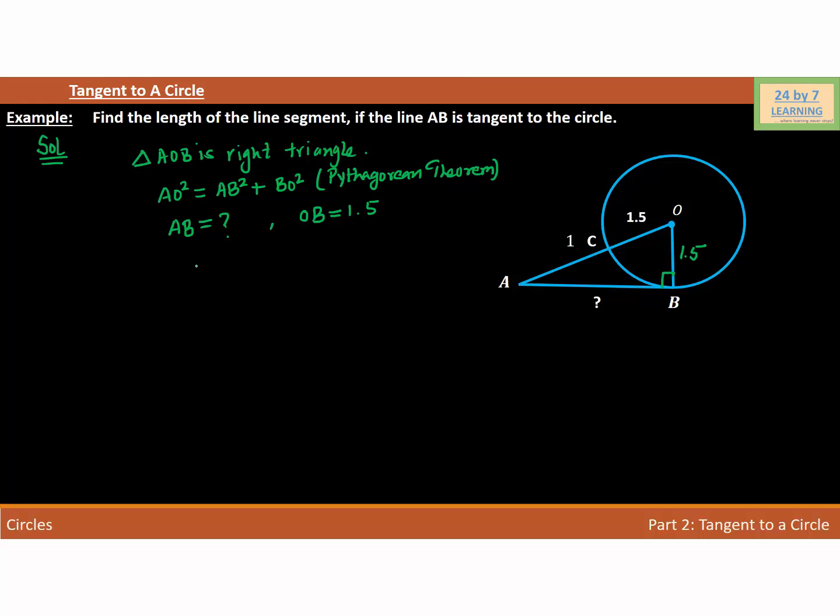Now let's look at AO. I can write AO = AC + CO, which is basically 1 + 1.5 because AC is 1 and CO is 1.5. If we add these two together, AO = 2.5. As you can see, we need to find the value of AB, and OB is 1.5 and AO is 2.5.